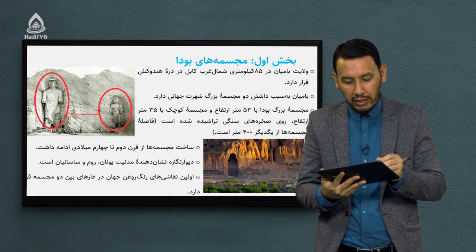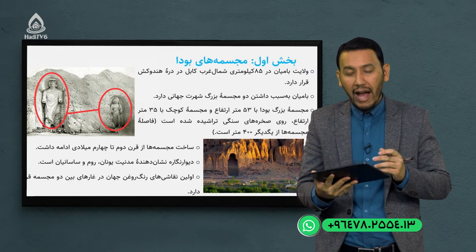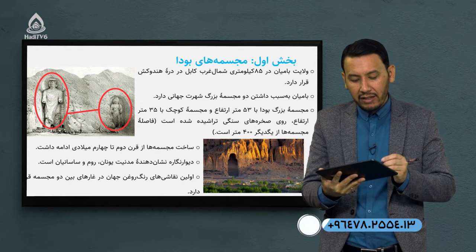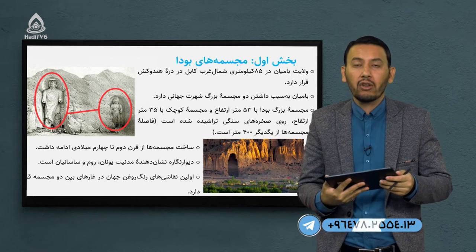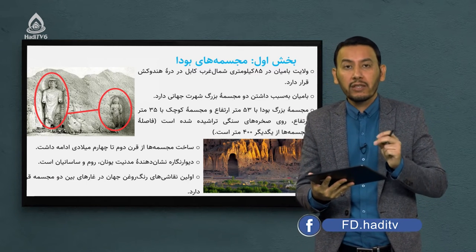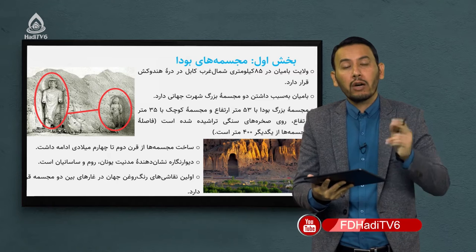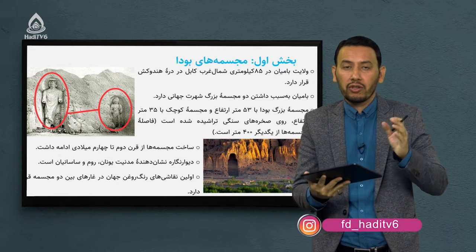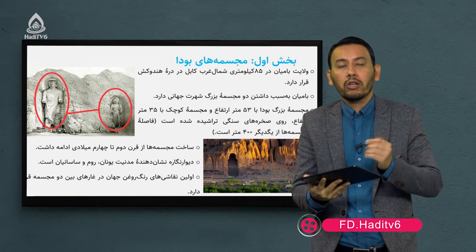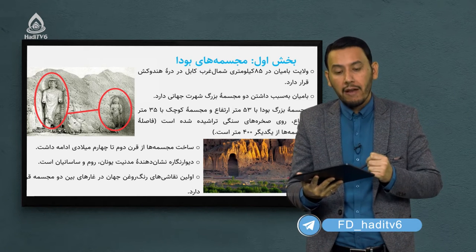فاصله بین دو مجسمه نزدیک 400 متر است. عظمت این مجسمه‌ها بسیار زیاد است. ساخت مجسمه‌ها از قرن دوم تا چهارم میلادی ادامه داشت. می‌گویند در دوره کوشانیان این مجسمه‌ها ساخته شده است. نزدیک 200 سال طول کشید که این مجسمه‌ها در آن قرن، بدون امکانات پیشرفته امروزی، ساخته شوند.